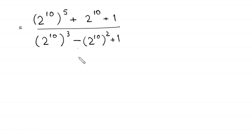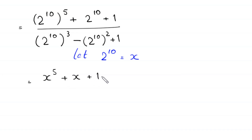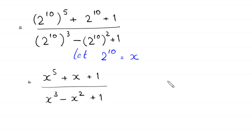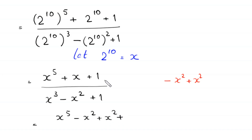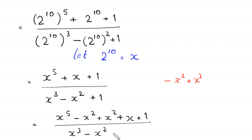Now, we suppose that 2 to the power 10 is equal to x. So this expression will become x to the power 5 plus x plus 1, divided by x cubed minus x squared plus 1. Now, in the numerator, we add and subtract x squared, so this will become x to the power 5 minus x squared, plus x squared plus x plus 1, divided by x cubed minus x squared plus 1.